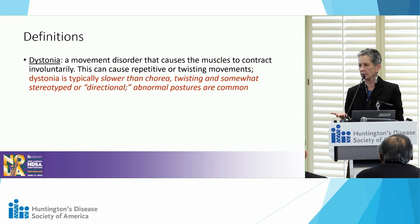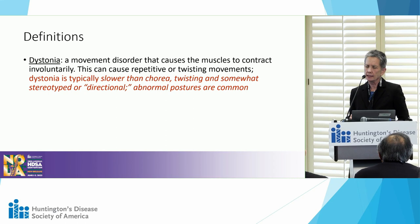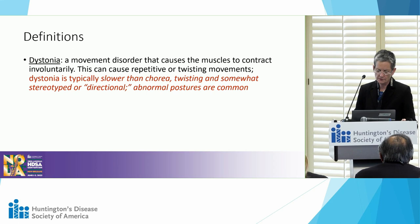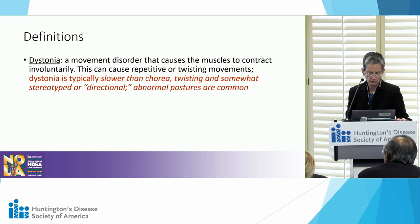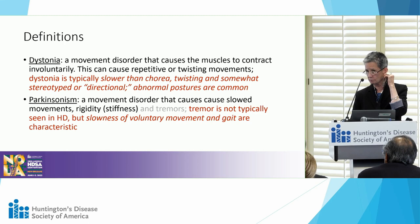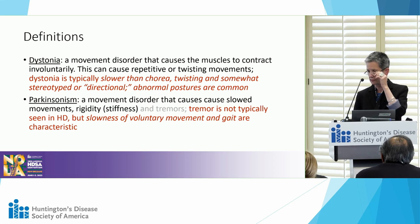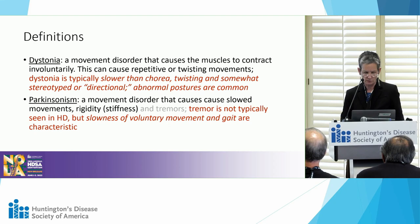Dystonia is a hyperkinetic involuntary movement disorder, different from chorea. Chorea is fast, random, and flowing, while dystonia is slower, more twisting, and more patterned — it has a repetitiveness that chorea doesn't, with movement going in the same direction repeatedly. Parkinsonism is an akinetic movement disorder — loss of movement — meaning stiffness, rigidity, slowness, slow walking, and small steps. Tremor is a prominent feature of Parkinson's disease but is rarely seen in Huntington's — Dr. Shannon has seen only one case of a resting tremor in a Huntington's patient.